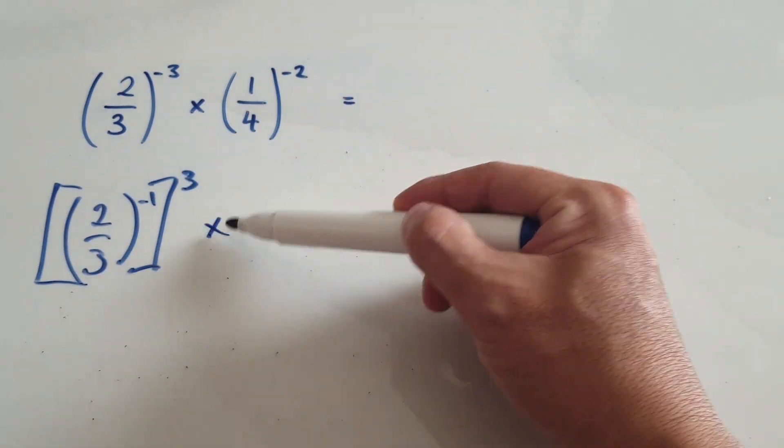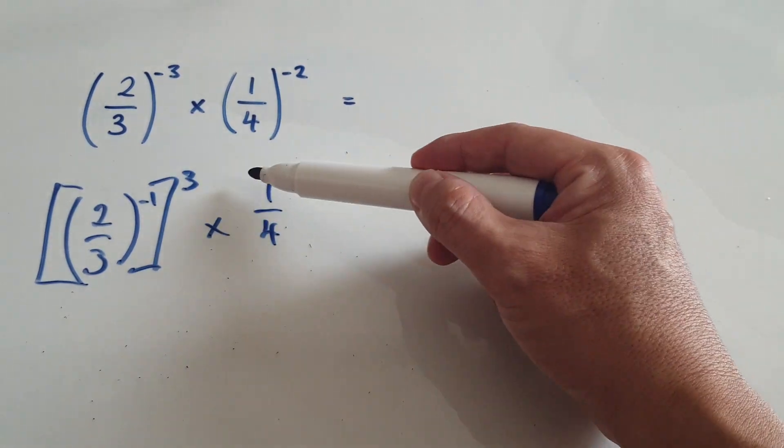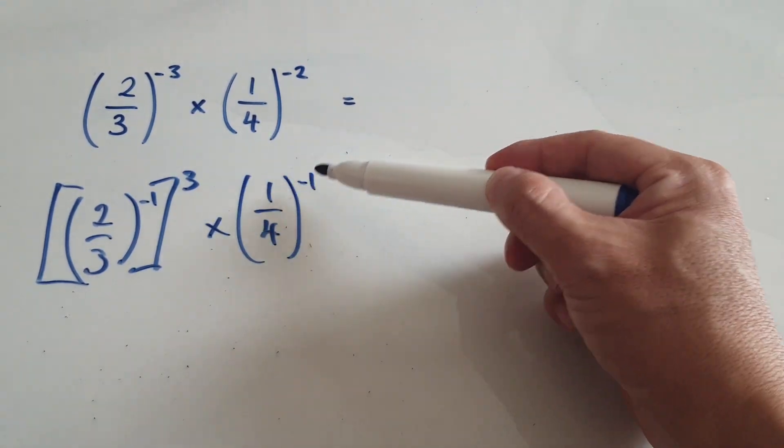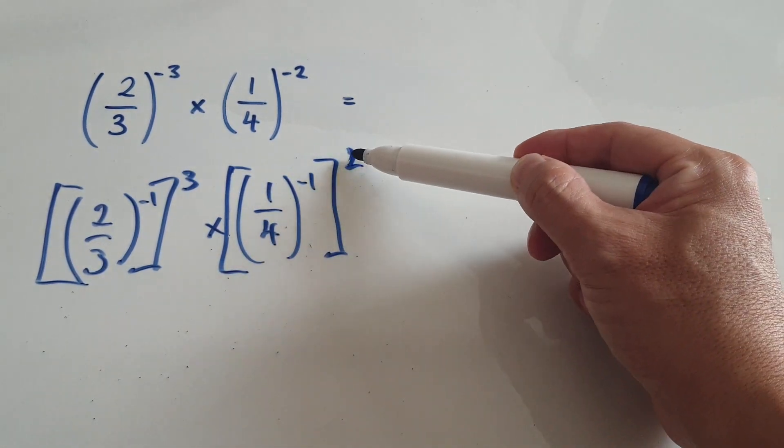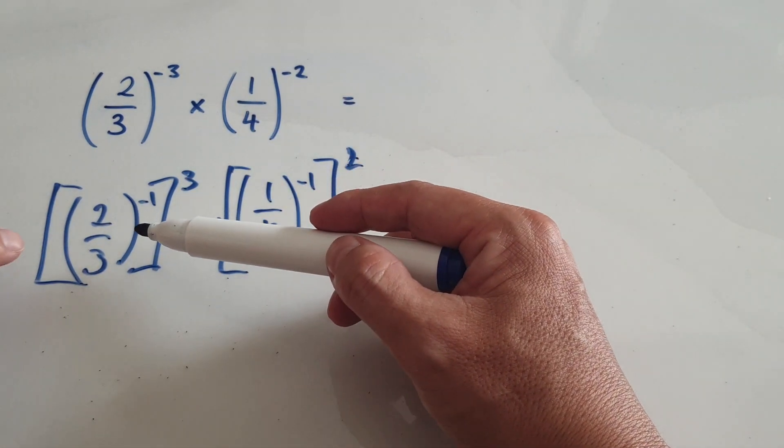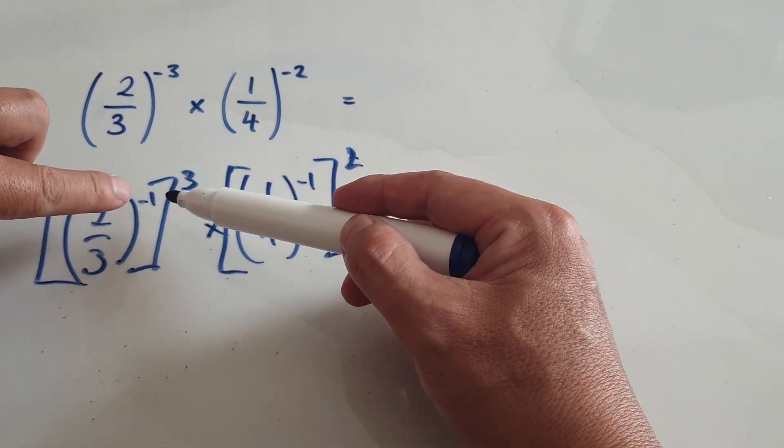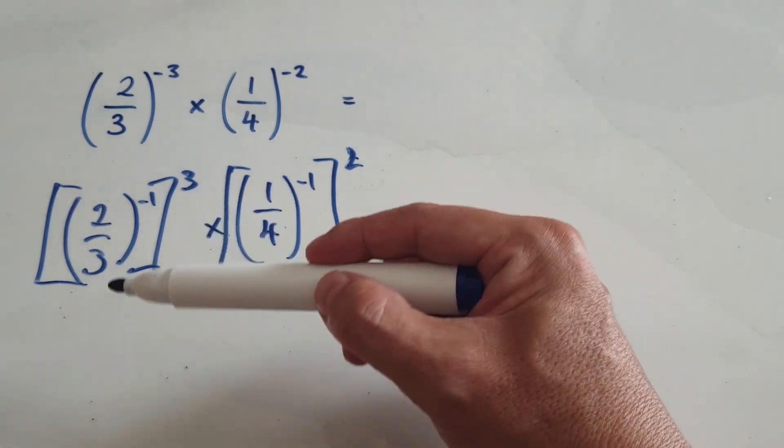And then you multiply it, extract the negative 1. So imagine this as 1 over 4 to the power of negative 1 and then to the power of positive 2. Because 2 times negative 1 will give you negative 2. So we've seen this before, a fraction to the power of a negative, you basically turn it upside down.